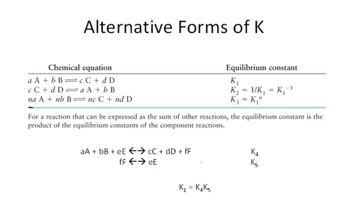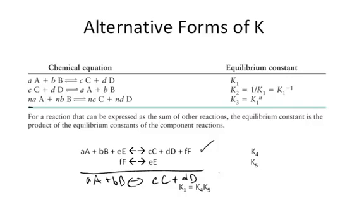Finally, if you are looking for a particular reaction that is the sum of two other reactions — A moles of A plus B moles of B in equilibrium with C moles of C plus D moles of D — but you only have equilibrium constant data for the individual reactions that include E, F terms, then you can calculate the value of K for the overall reaction by multiplying together the equilibrium constants for the individual reactions.